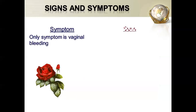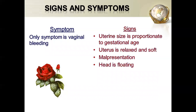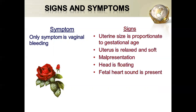What are the signs and symptoms of placenta previa? The only symptom is fresh vaginal bleeding. The signs include a uterine size proportionate to gestational age, a relaxed and soft uterus, malpresentation, floating head, and fetal heart sounds present.